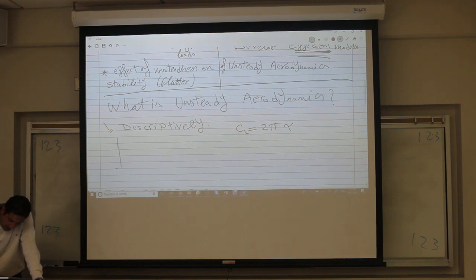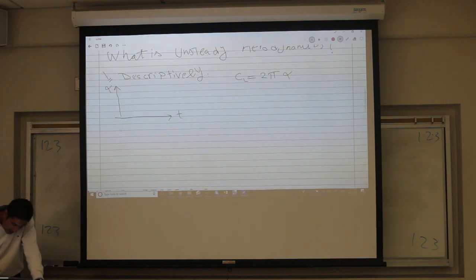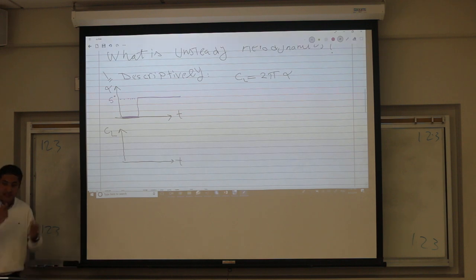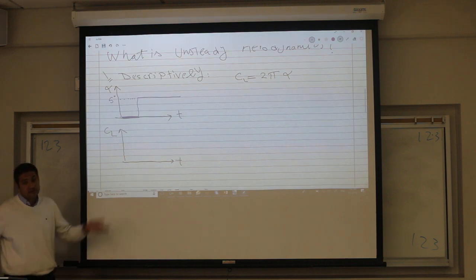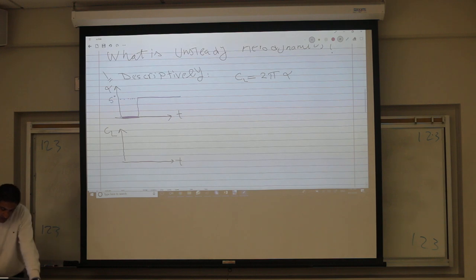If I have my flat plate at some angle of attack, here is alpha as a function of time, and here is the corresponding lift as a function of time. My angle of attack is 0 for some time, and then I give it a step change in the angle of attack—here is, say, 5 degrees. You're flying, and as a fighter pilot, you just pull the stick—instantaneous change in the angle of attack. Or the airplane is flying and an instantaneous gust hits it that increases the angle of attack sharply 5 degrees. What will happen to the lift?